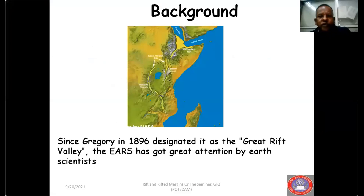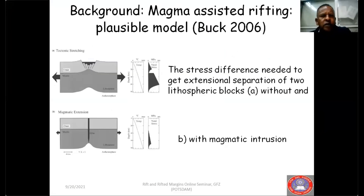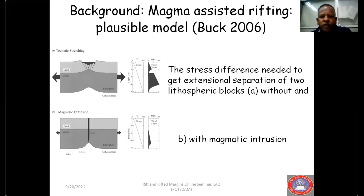Since Grigori in 1896 designated it as the Great Rift Valley, the East African rift system has received great attention by earth scientists. On the mode of deformation, there are different theories and hypotheses, but the one recently accepted — which seems plausible — is magma-assisted drifting, especially by Buck 2006. The stress difference needed for extension without magmatic intrusion requires a lot of stress, whereas with magmatic intrusion it requires less. That is the mechanism which seems to be working in the East African rift system.